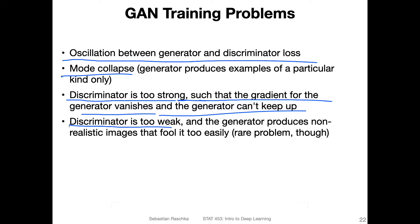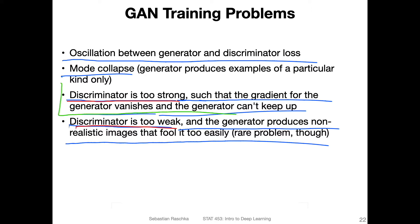Another problem could be that the discriminator is too weak, and the generator produces non-realistic images that fool it too easily. In practice, it's usually the discriminator that is too strong, because classification is easier than data generation. There is a little trick we can apply to address this problem to some extent.